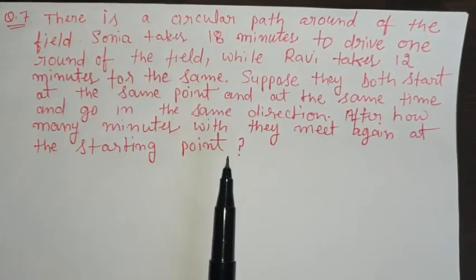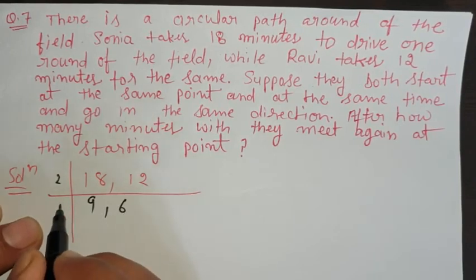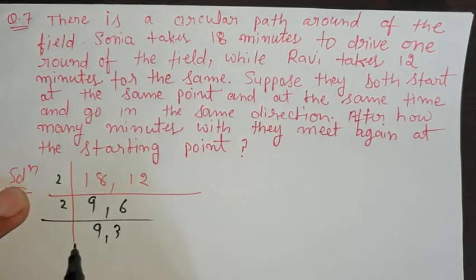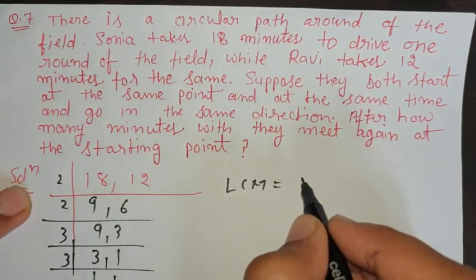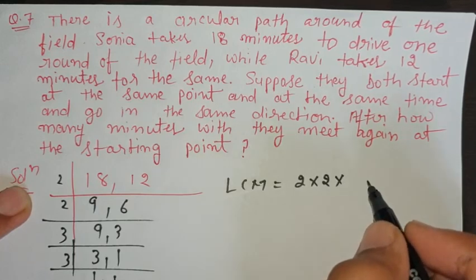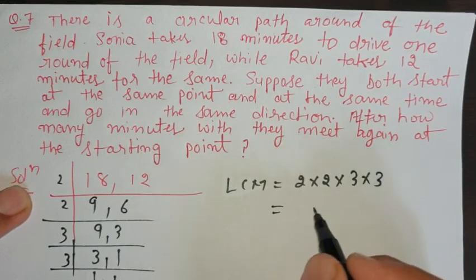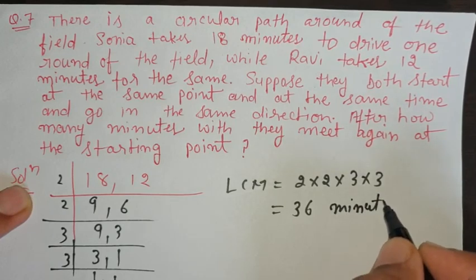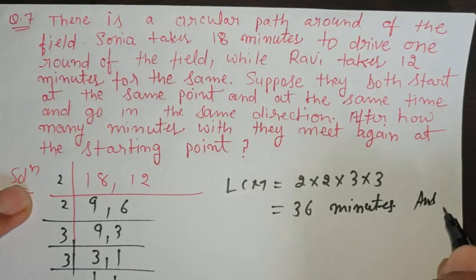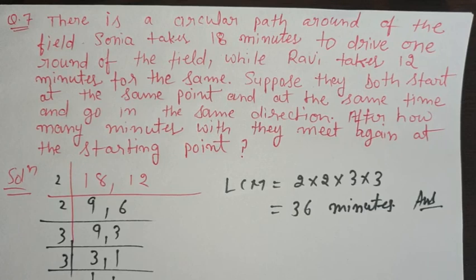It is very simple — we take the LCM of 18 and 12. LCM calculation: 2 × 2 × 3 × 3 = 36. So after 36 minutes they will meet again at the starting point. Exercise complete — please subscribe and like.